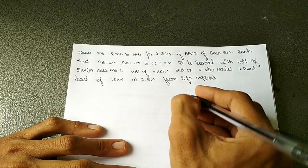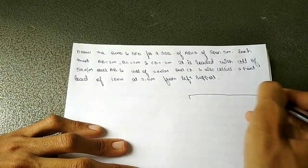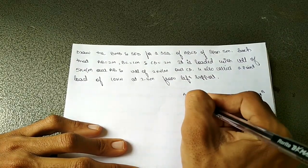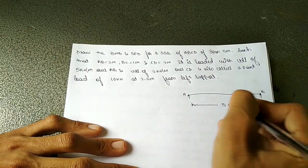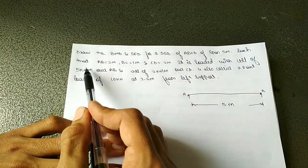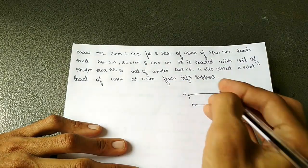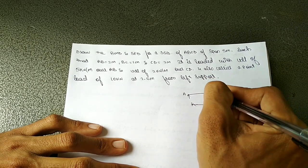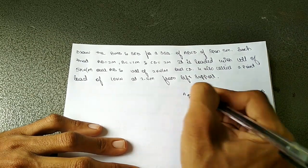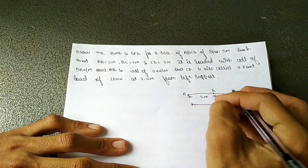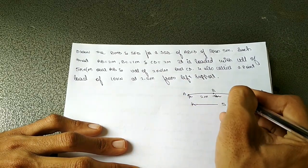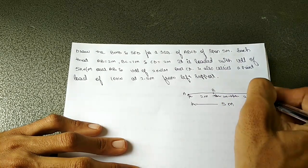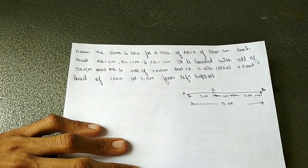So let us draw a span of 5 meters. The overall span is 5 meters. A to B is 2 meters, B to C is 1 meter, and C to D is 2 meters.